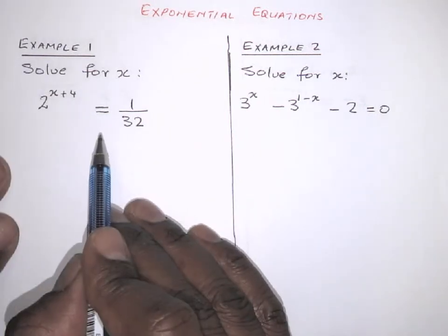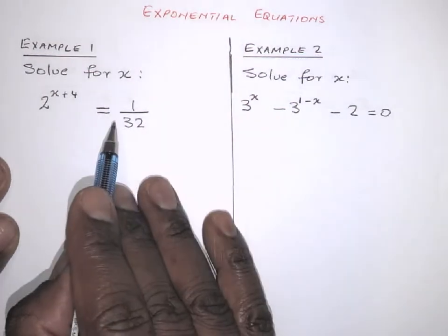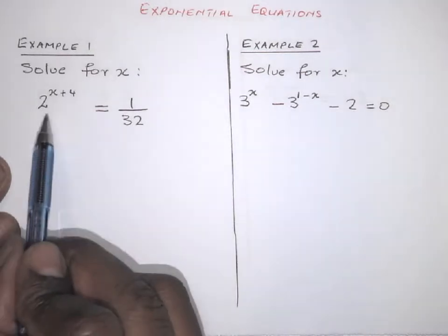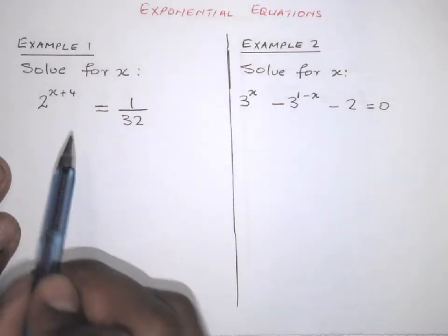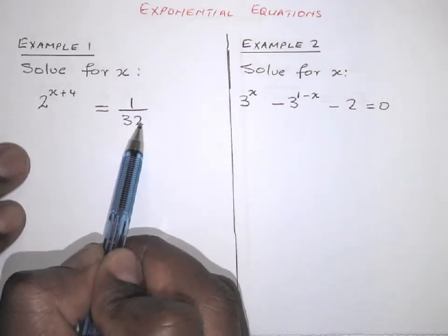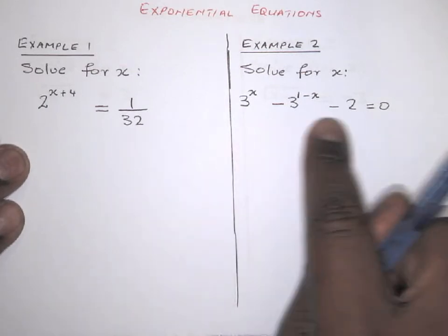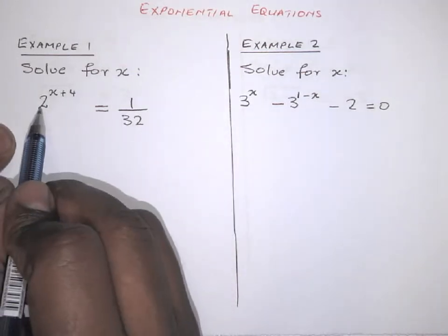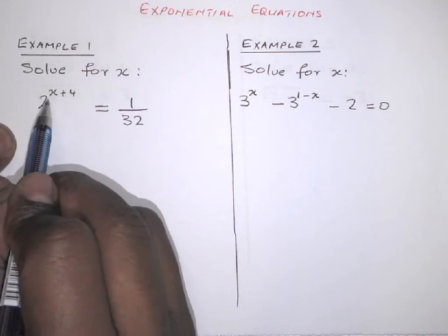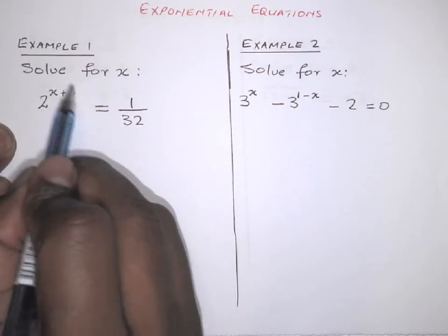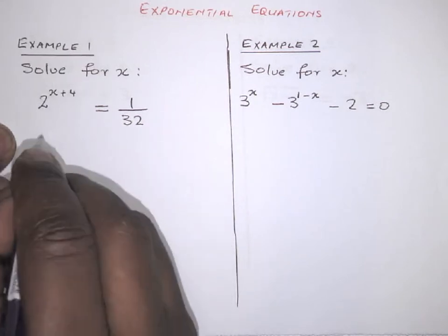In Grade 10 you were able to solve some exponential equations where you had one term equal to one term — those were easy to solve. Now let's look at this first example. The first thing you must make sure is that the bases are prime numbers. 2 is a prime factor, so that side is fine.